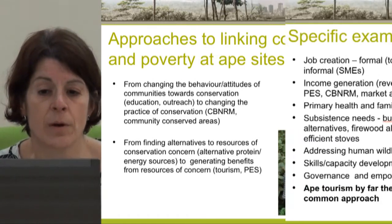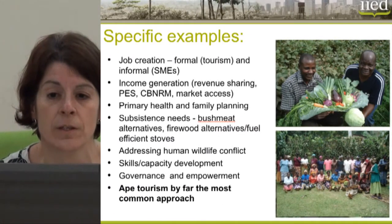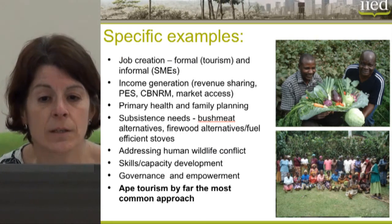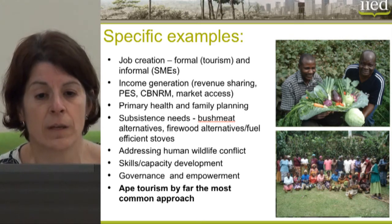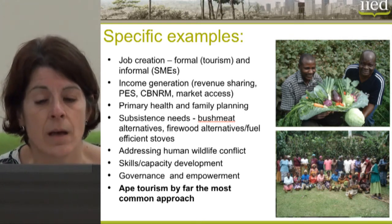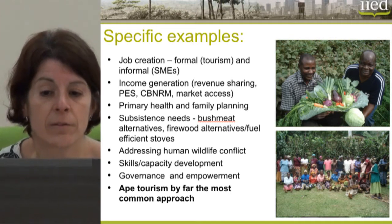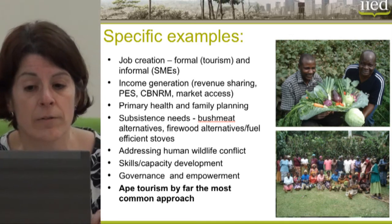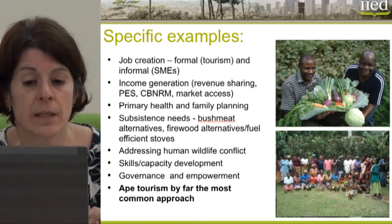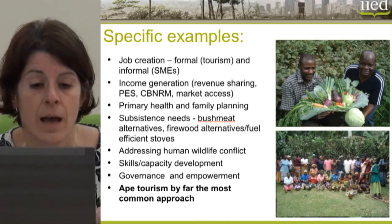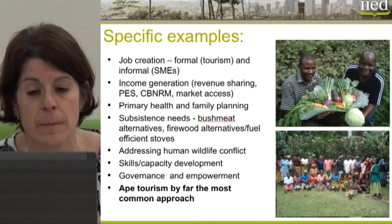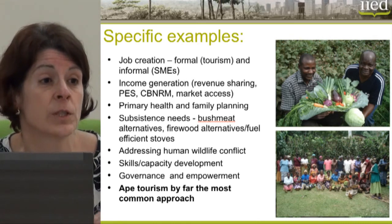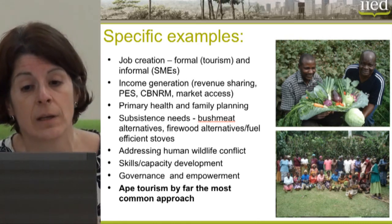Specific examples of interventions that conservation organisations are involved in, including tourism, are: job creation in the formal or informal sector, income generation, providing primary health and family planning, providing for subsistence needs, addressing human-wildlife conflict, building skills and capacity, and improving governance and empowerment. Ape tourism is by far the most common approach for generating financial benefits at a local level.